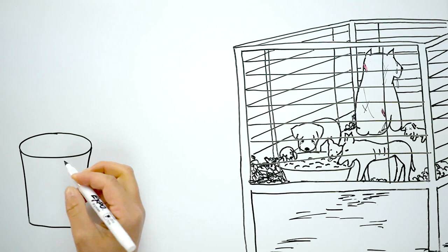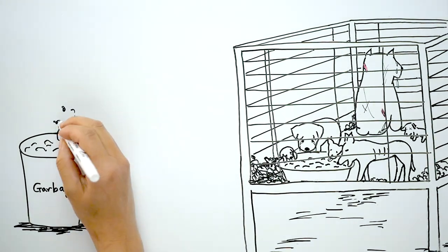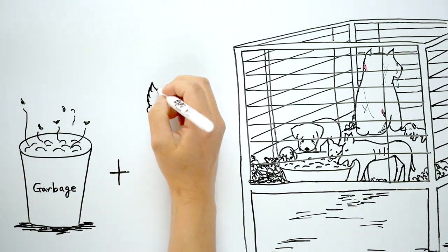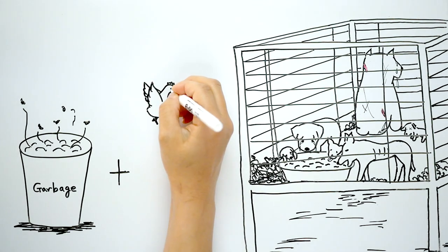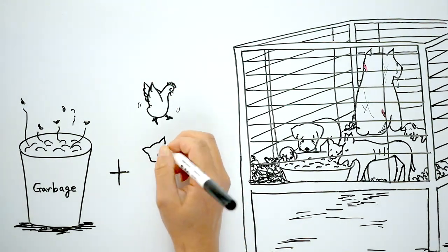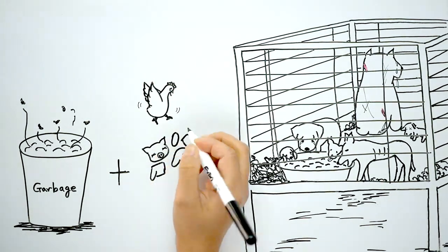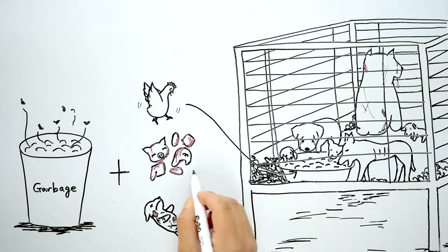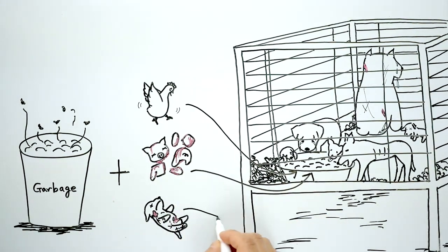About once a day, a man came to feed us, but our food came straight out of the garbage can. Sometimes we were fed sick chickens who were still alive, dead pigs, or even our own friends, other dogs.